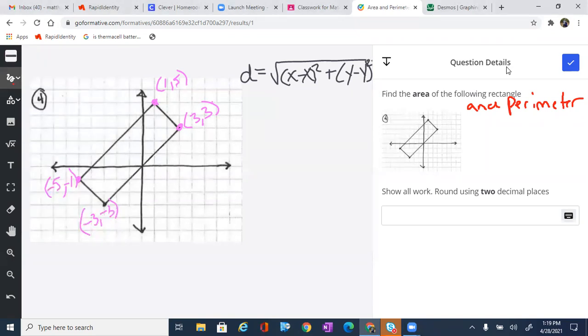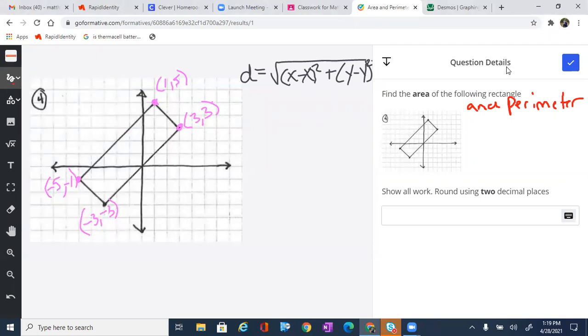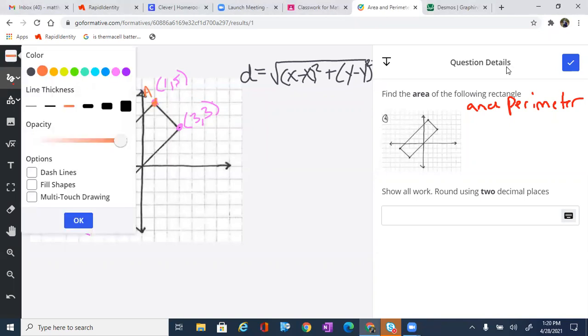We're going to start by finding the area and perimeter. In order to do that, we're going to find these sides. And it is a rectangle, so we really only have to find two sides. Let's go ahead and label and we'll find the short side first. We'll say that we have point A and that we have point B.